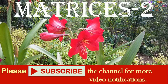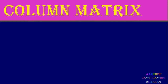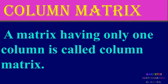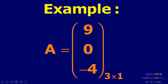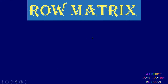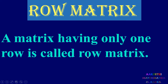Please subscribe the channel for more video notifications. First, column matrix: a matrix having only one column is called a column matrix. Consider example A equal to [9, 0, -4]. Here we have three rows and only one column, so this is called a column matrix. This matrix has three rows and one column, so the order is 3 by 1.